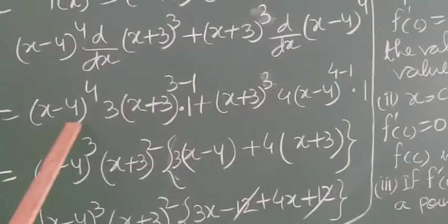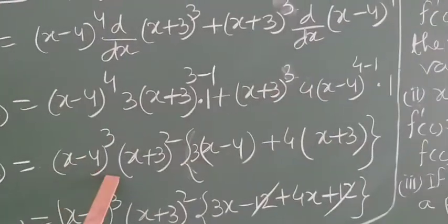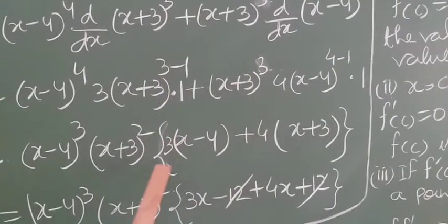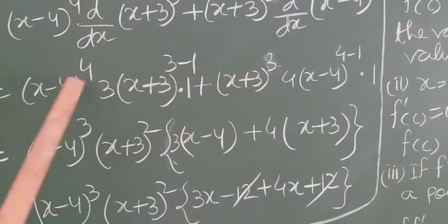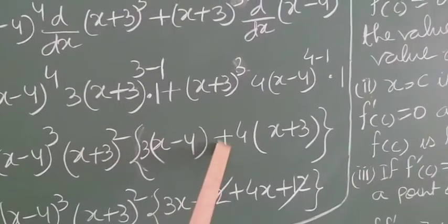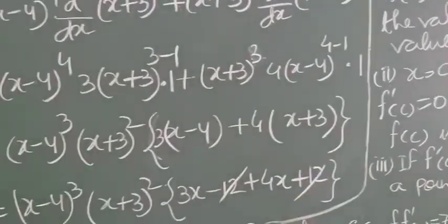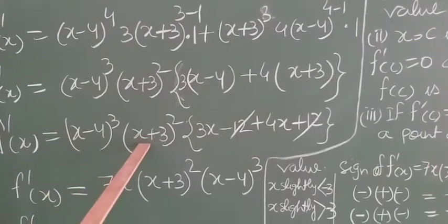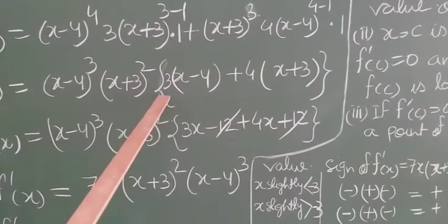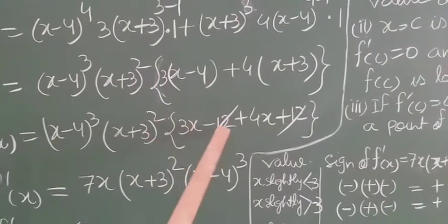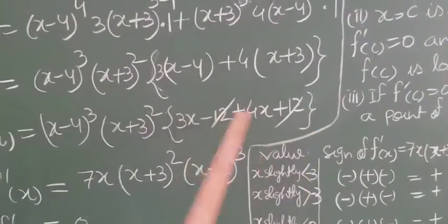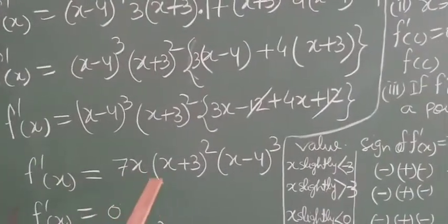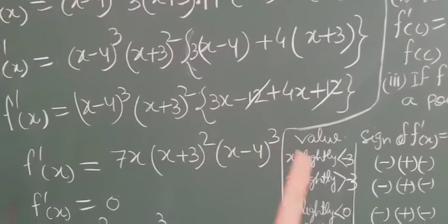Now we take common (x−4)³ · (x+3)². What is left inside the bracket: 3 times (x−4) plus 4 times (x+3). When we open the bracket it becomes 3x−12 + 4x+12. The 12 cancels, giving 7x. So f'(x) = 7x · (x+3)² · (x−4)³.